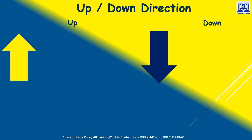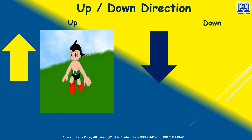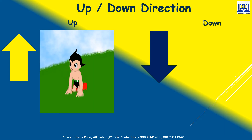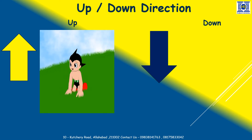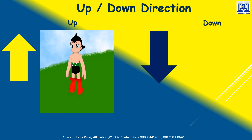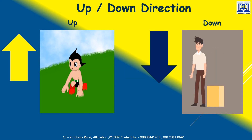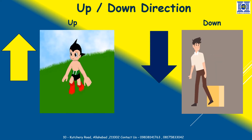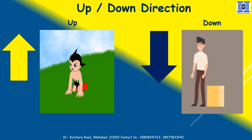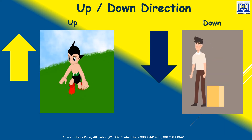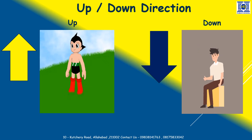The next is the up and down direction. Children, can you see over here the boy is standing up? This is the up direction. Now just take your hand and lift it vertically up — that will become your up direction. Can you see over here the man is sitting down? This is your down direction. Now move your hand vertically down — this will be your down direction.